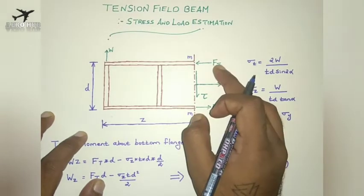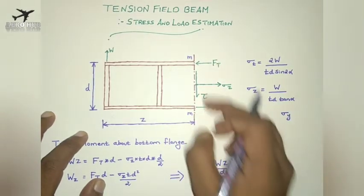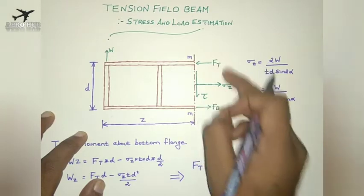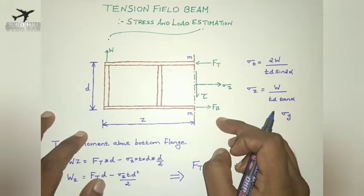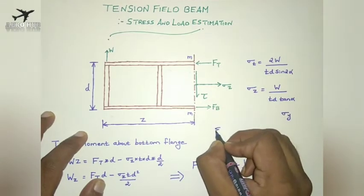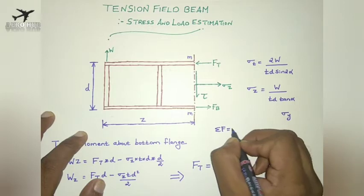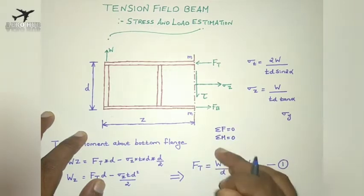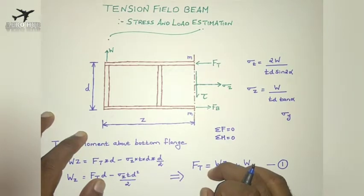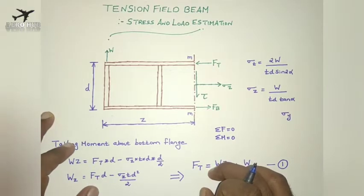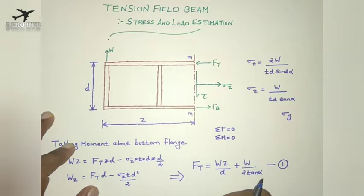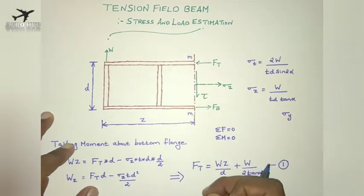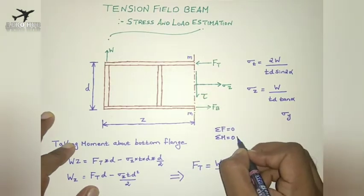To find the direct load acting on the top and bottom flanges, we use static equilibrium equations: summation of forces equal to zero and summation of moments equal to zero. To find the force acting on the top flange, I will use the condition that the summation of moments equals zero.